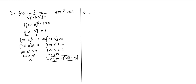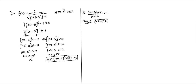Question 3: |x+3|/(x+2) > 1. To solve this type of inequality involving modulus, we need to open the modulus. We make two cases. Case 1: when the number inside the modulus, x+3, is ≥ 0. Then the modulus opens as it is: (x+3)/(x+2) > 1, so (x+3)/(x+2) - 1 > 0. We never cross-multiply directly unless we are sure whether the number is positive or negative.